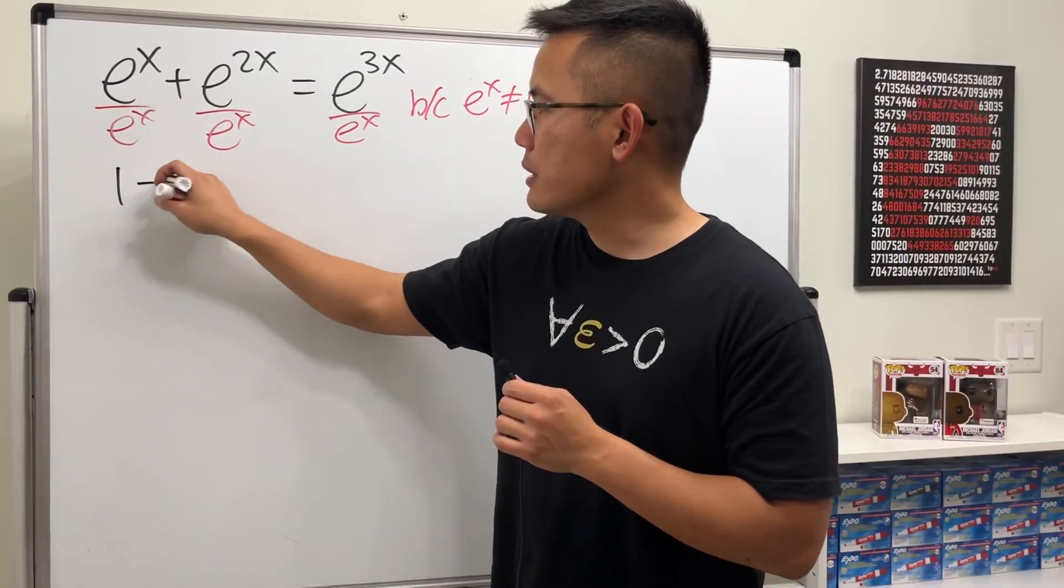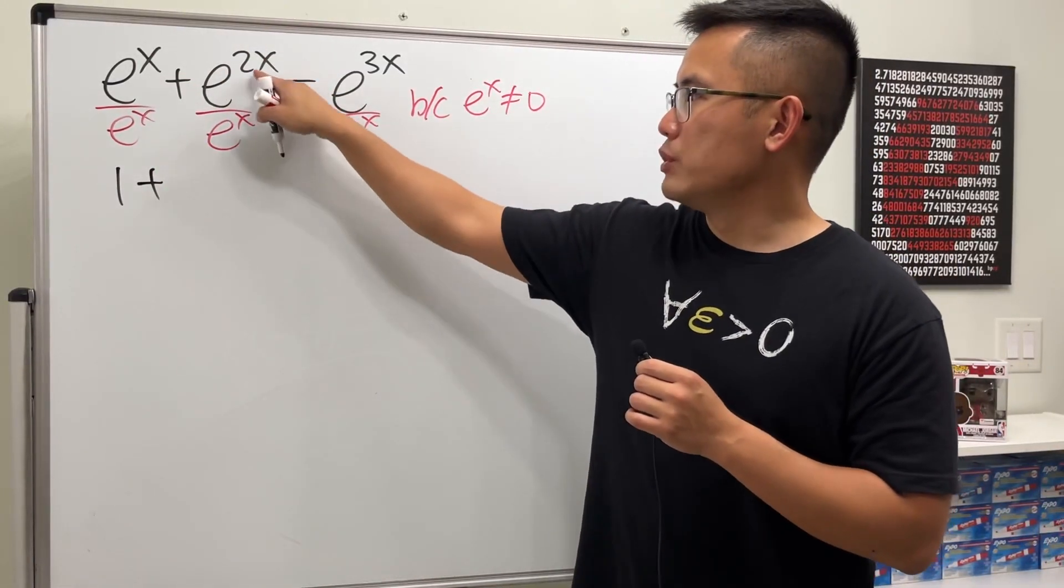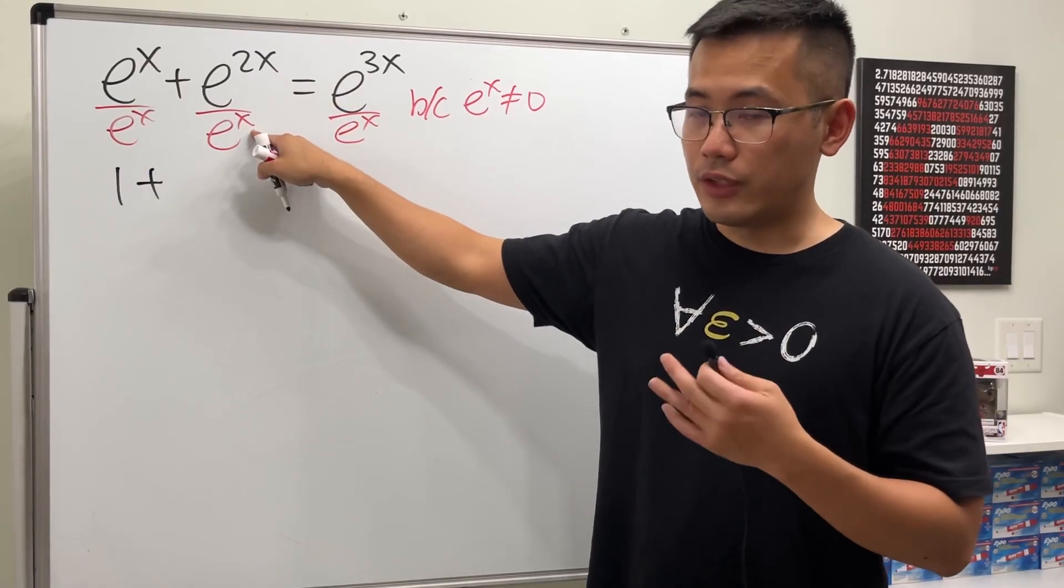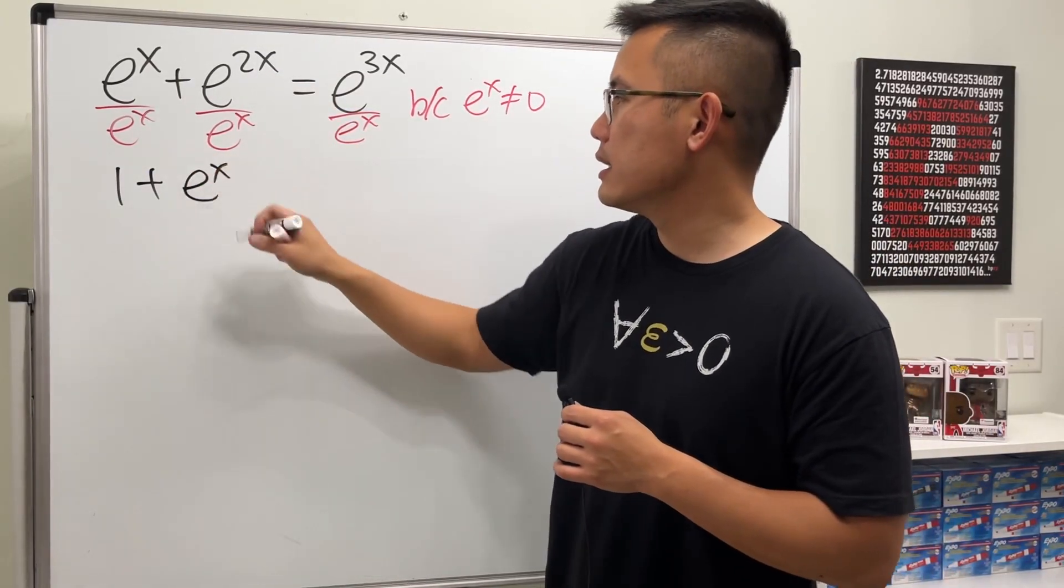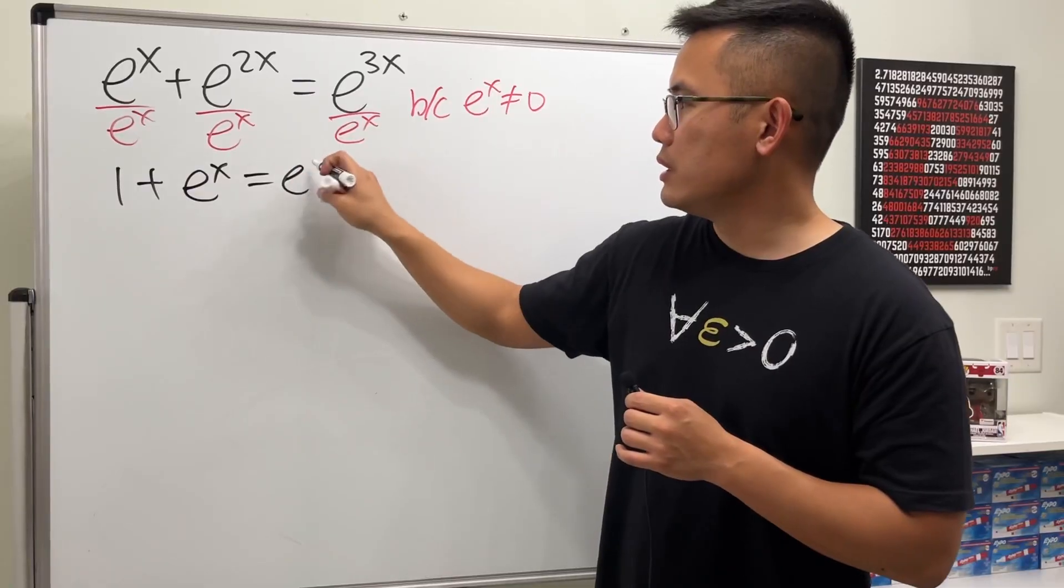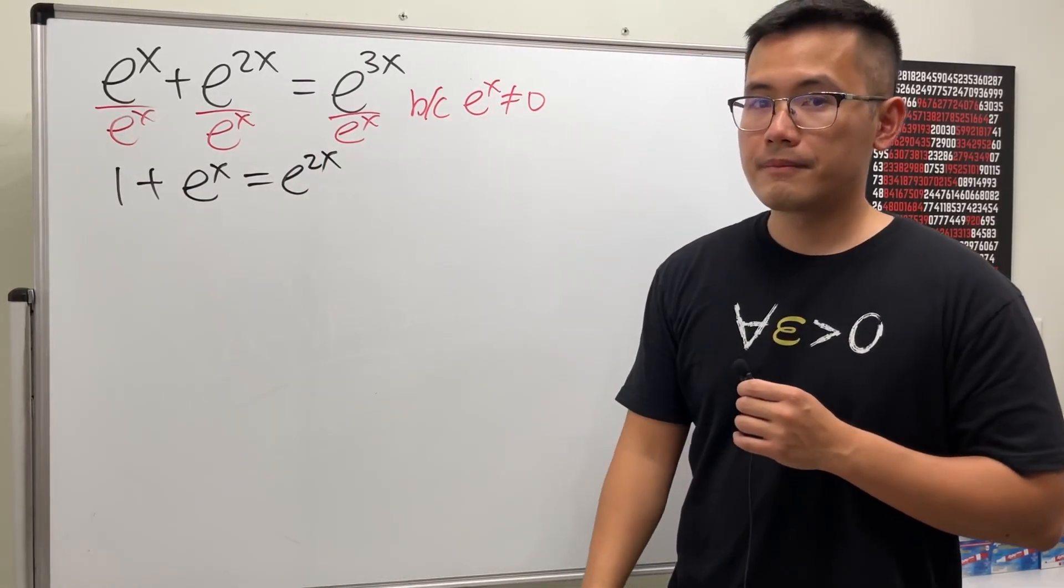Then we will get 1 plus, this divided by that, we just do 2x minus x, that's the new exponent, which is just e^x. Similarly, we get e^(2x).